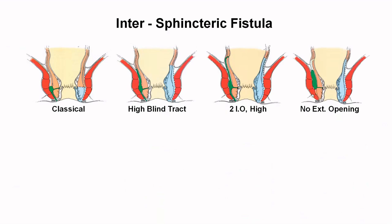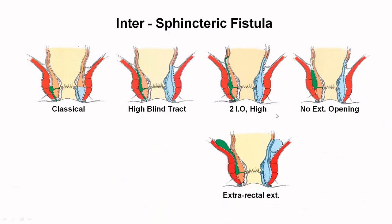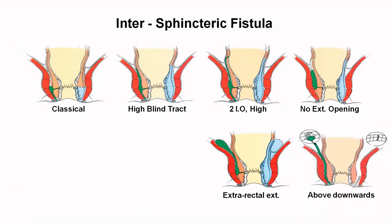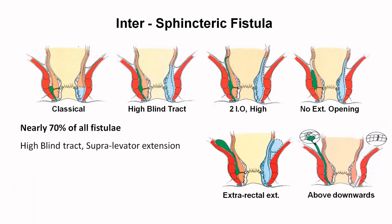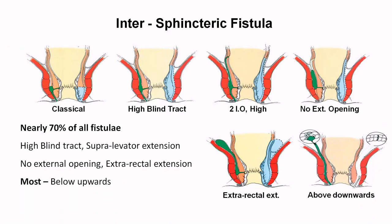There can be an abscess with no external opening — this is also an inter-sphincteric abscess. Extrarectal extension can be seen above the external sphincter along the levator. Sometimes an anastomotic leak tracking down in the inter-sphincteric space is an above-downwards pathology. Nearly 70% of all fistulas are inter-sphincteric. Most are from below upwards — a cryptoglandular theory-based abscess — which then causes a classical tract, blind tract, multiple internal or external openings.